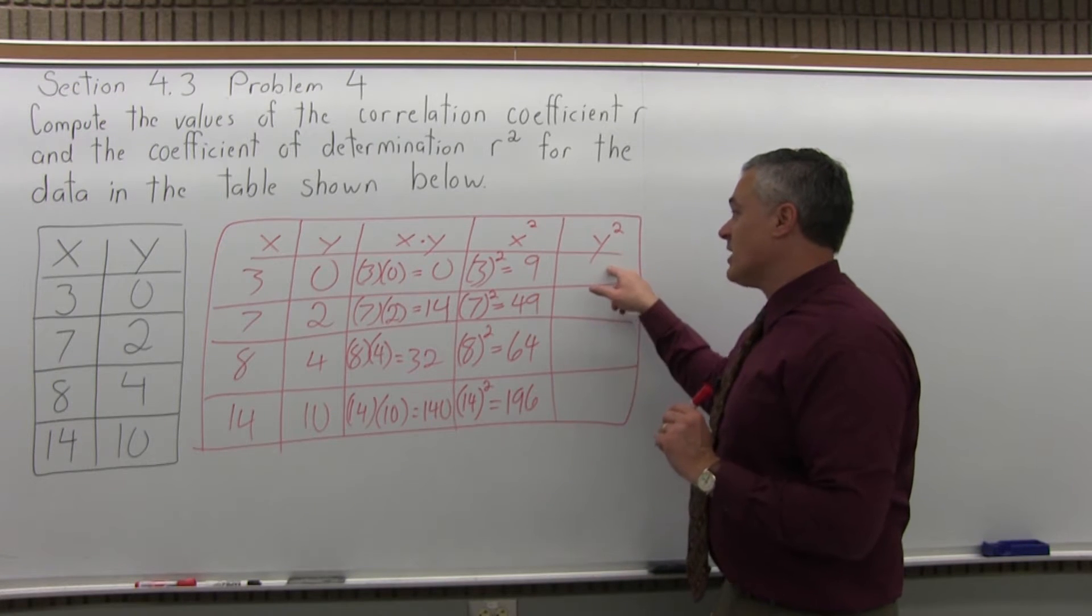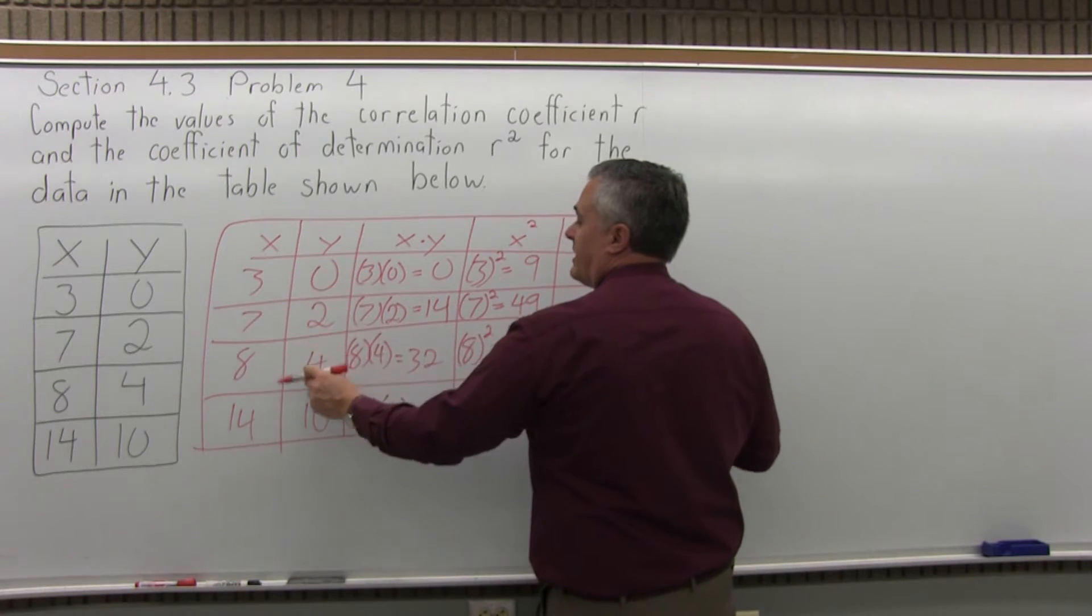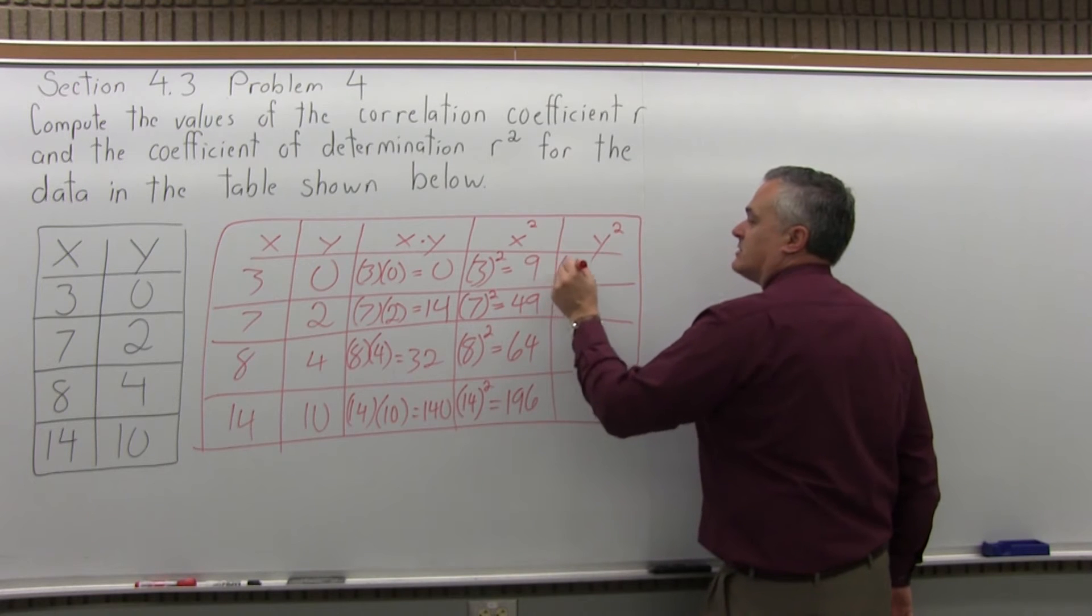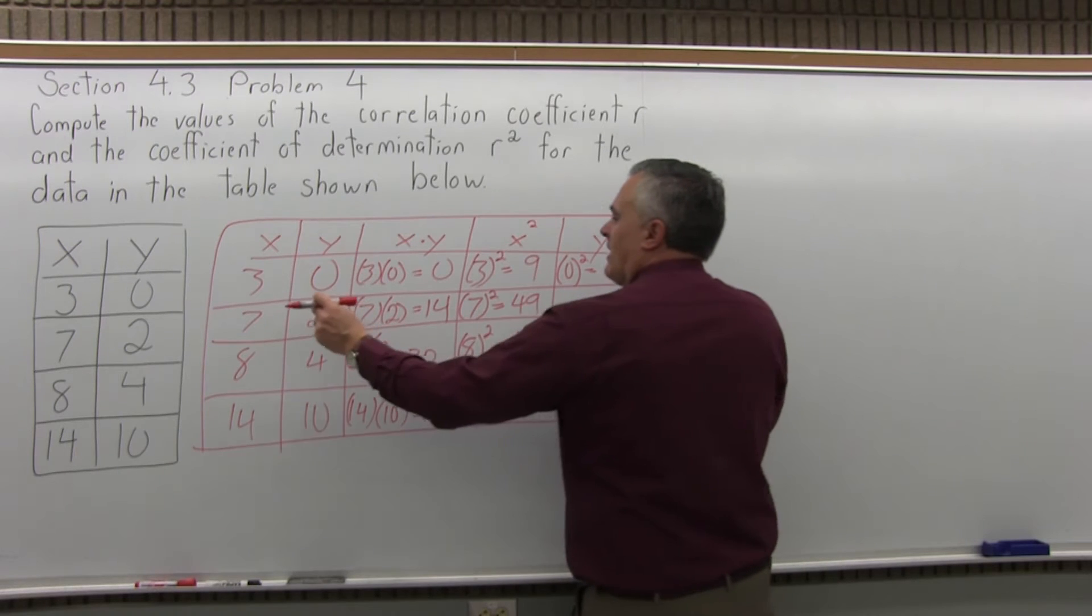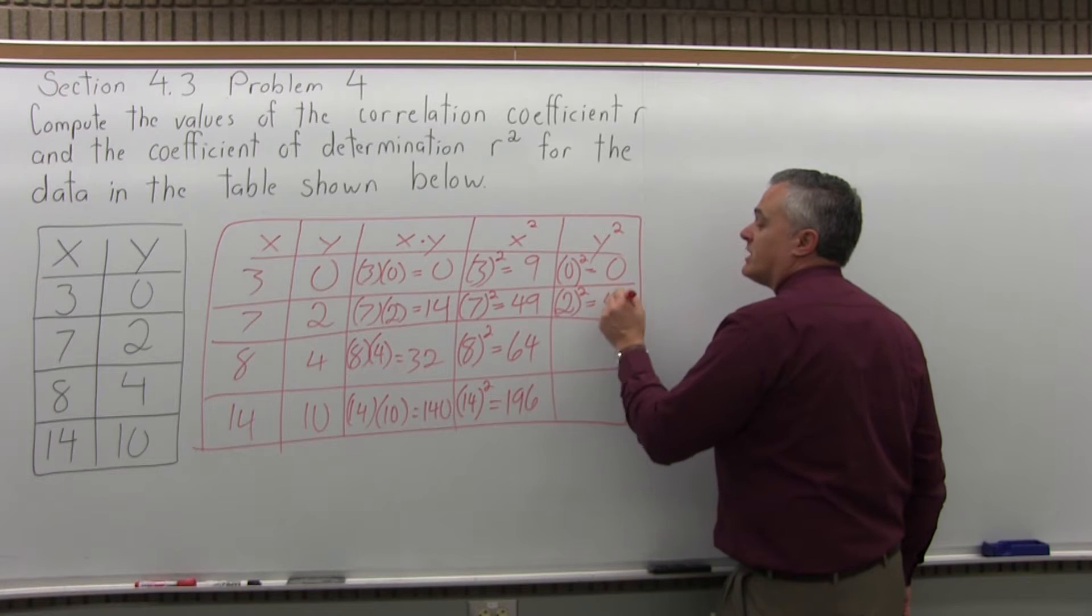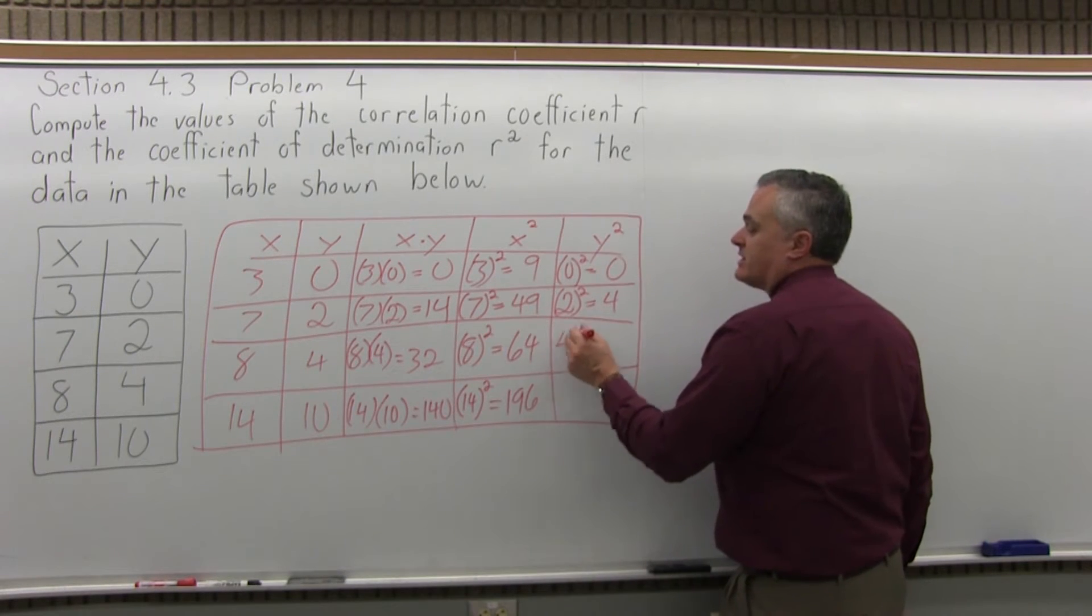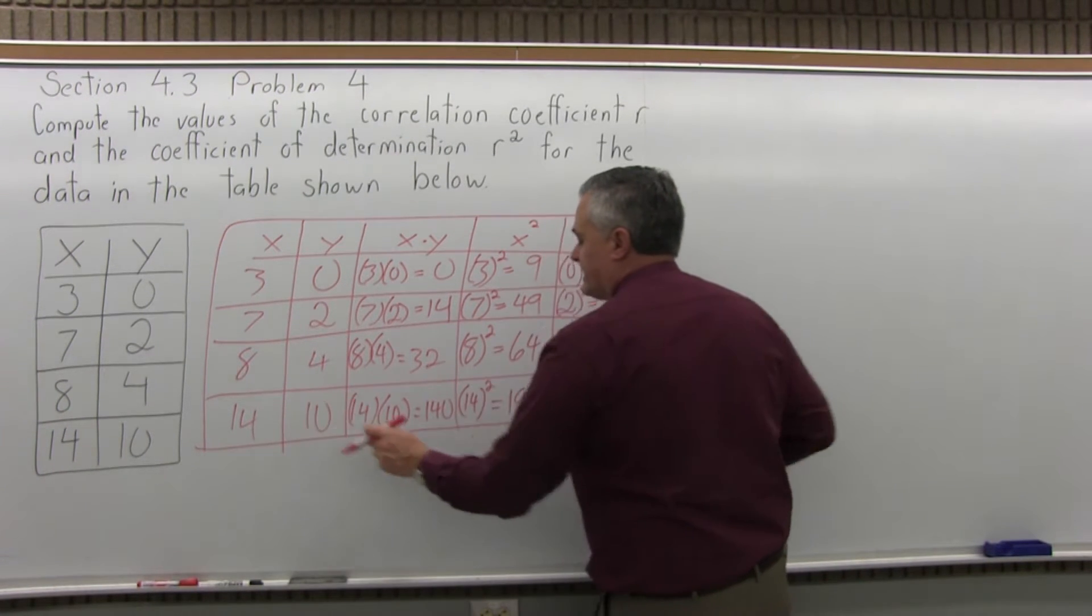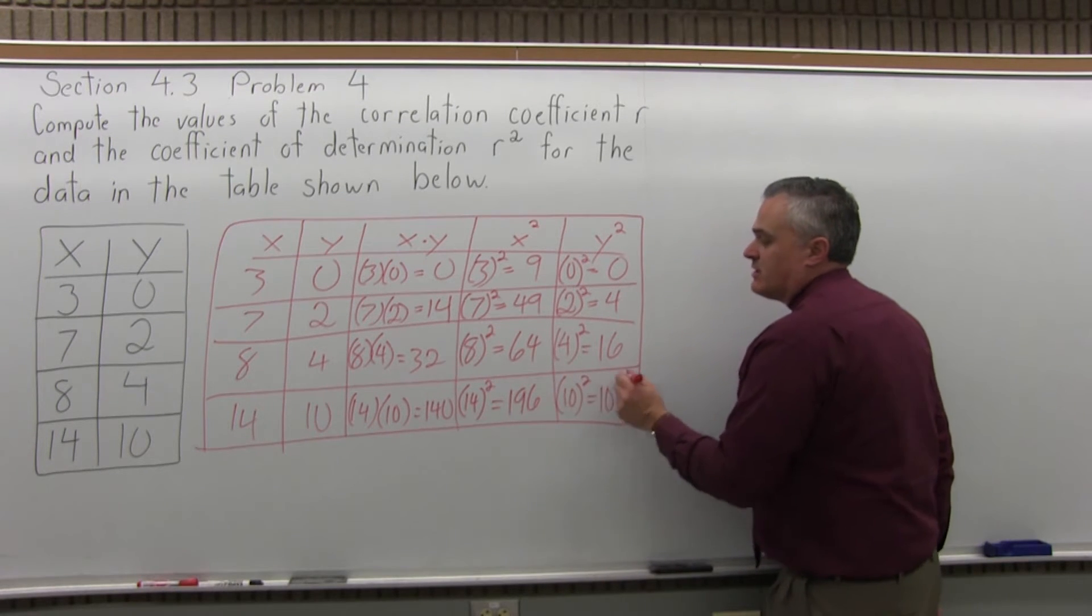And finally, one last column to go, y squared. Make sure it's y that you're doing the second power. Top row, y is 0, so y squared becomes 0 times 0, which is 0. Next value of y is 2, so y squared becomes 2 times 2, which is 4. The next value of y is 4, so y squared is 4 times 4, which is 16. And finally, the last value of y is 10, so y squared is 10 times 10, which is 100.